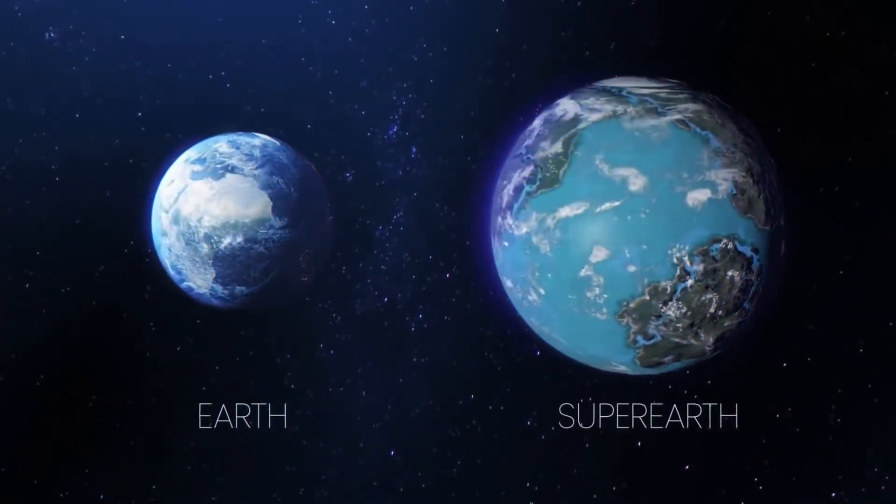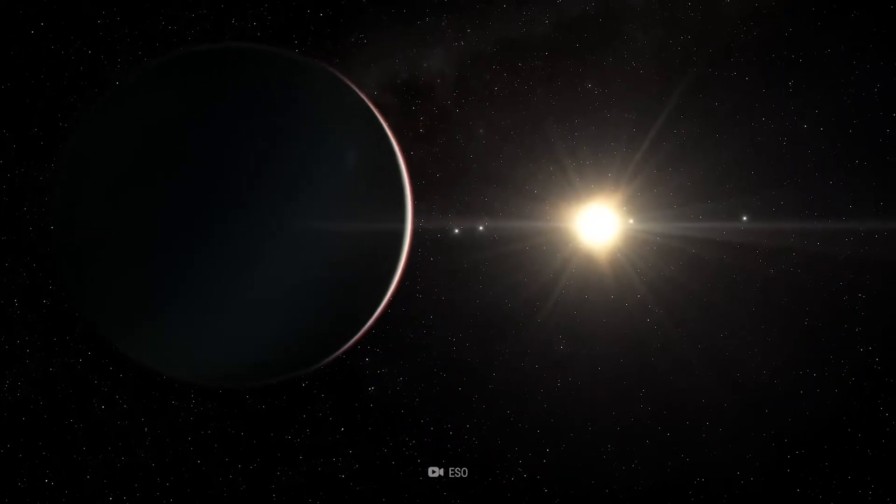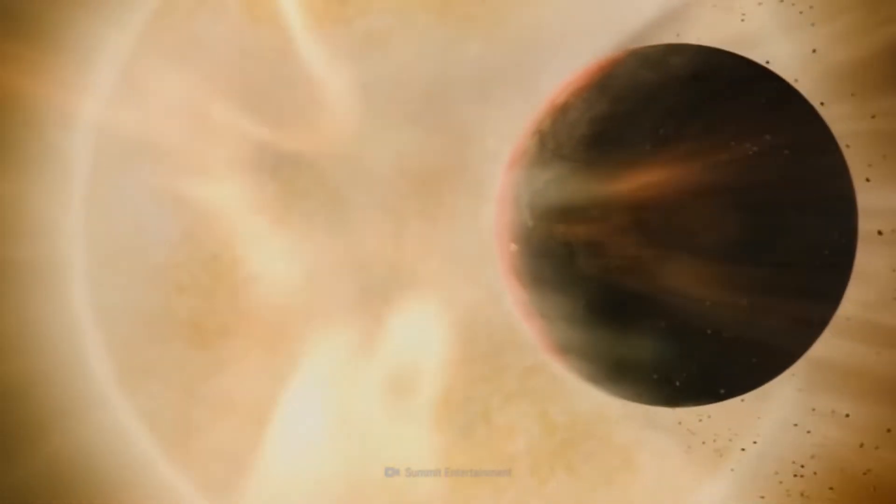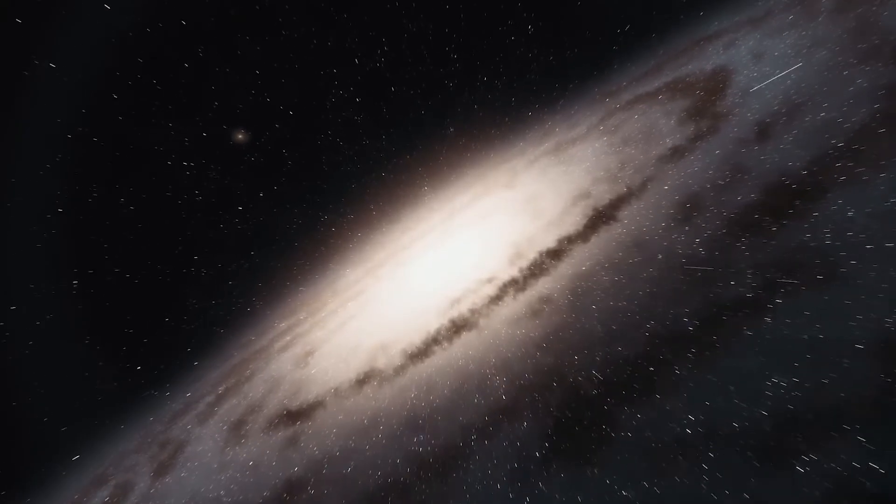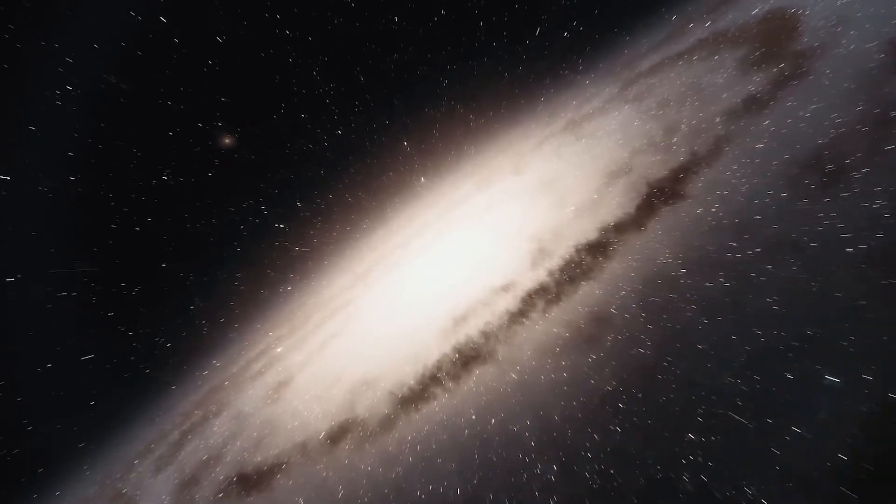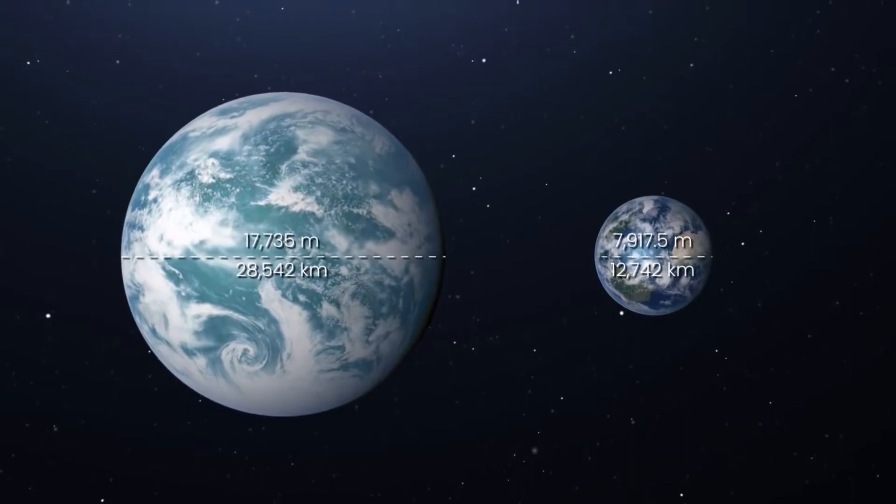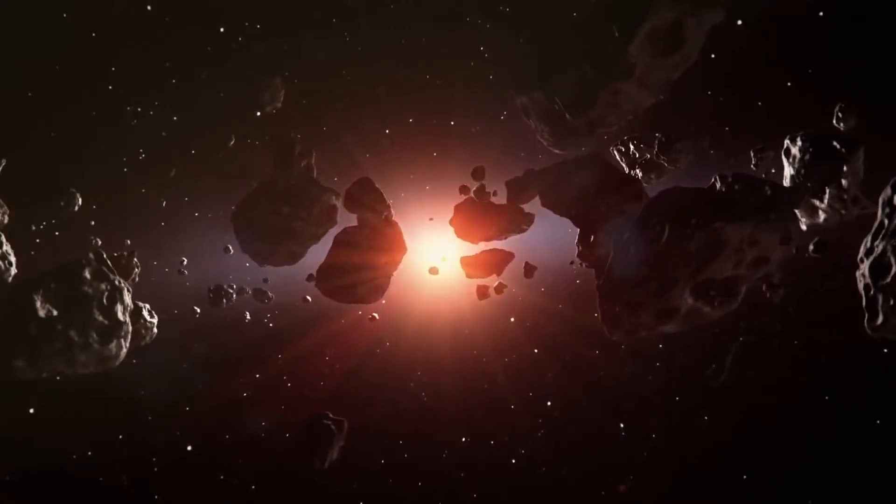Kepler-62 orbits its red dwarf star more closely than the Sun does to the Sun, although the star emits much less light. Given its distance of 1,200 light-years in size, Kepler-62f is in the neighborhood of potentially rocky planets that might have oceans.